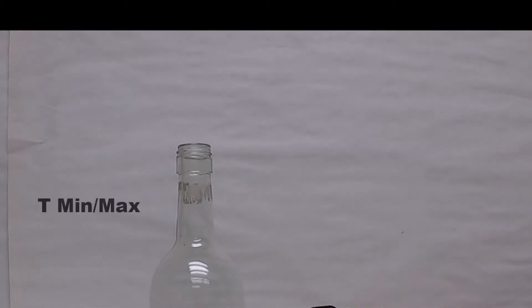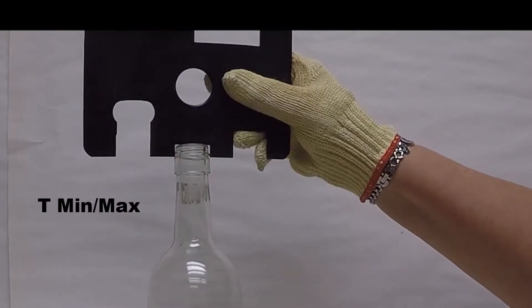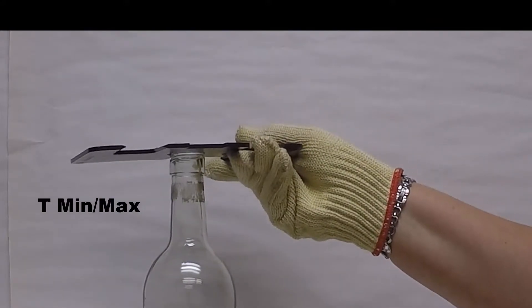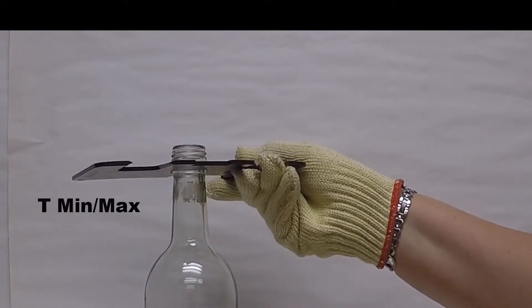Next is the T min and max. As you're rotating the bottle through the min, it should not go over the finish. The max should go over the threads, but not over the bead.